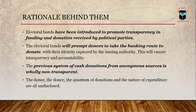The rationale behind electoral bonds was to bring in transparency, as claimed by the government. Electoral bonds were introduced to promote transparency in funding and donations received by political parties for campaigning during elections or for other day-to-day activities. The government says it prompts donors to take the banking route to donate, where their identity will be captured by the issuing authority — that is, the identity of the donor will be captured by the bank. This will ensure transparency and accountability. The previous system of cash donations was from anonymous sources and was wholly non-transparent, with the donor, quantum of donations, and nature of expenditure all remaining undisclosed.